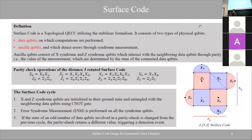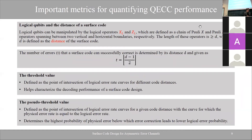The surface code unfortunately suffers from these types of undetected errors, called logical errors, which happen when errors span all qubits from one side of the lattice to the other. This introduces the notion of distance.